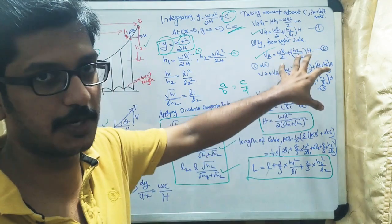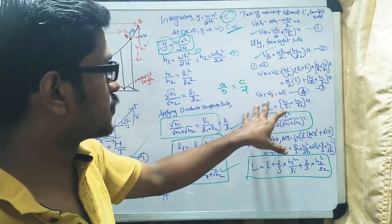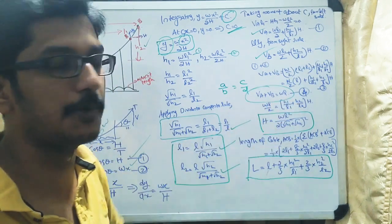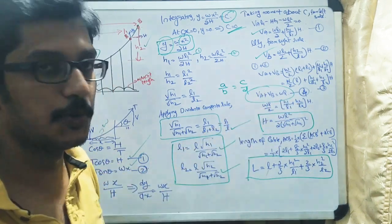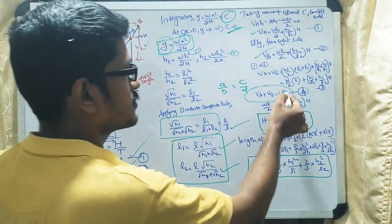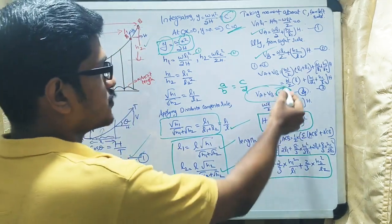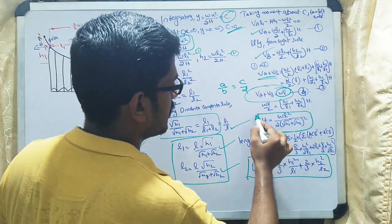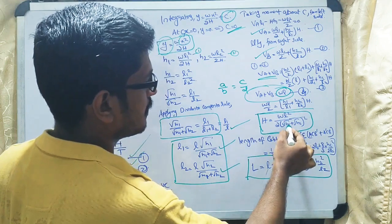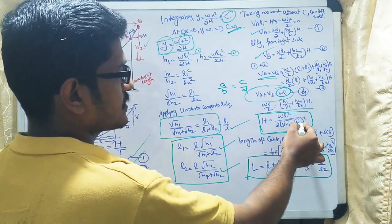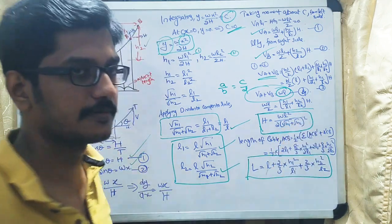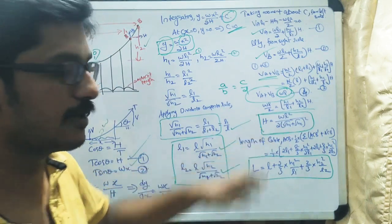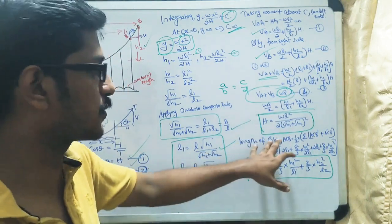From the figure, we know that VA + VB must equal the total UDL load, which is w·L. Substituting this equilibrium condition and solving, we finally get the horizontal thrust H = wL²/[2·(√h1 + √h2)²]. This is the key formula for horizontal thrust when the cable supports are at two different levels.